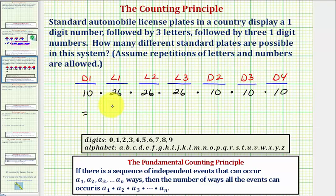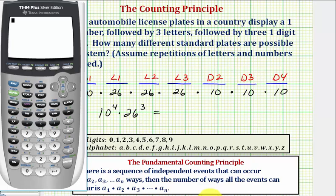Let's go ahead and rewrite this as ten to the fourth times twenty-six to the third. And now we'll go to the calculator. So we have ten to the fourth, times twenty-six to the third, equals one hundred seventy-five million, seven hundred sixty thousand.